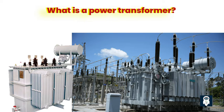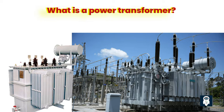Step-up transformers increase the voltage from the generation level to a higher voltage suitable for long-distance transmission over transmission lines. Step-down transformers, on the other hand, decrease the voltage from the transmission level to lower distribution voltages suitable for consumer use. Power transformers are designed to handle high power ratings and operate at high voltage levels, typically ranging from hundreds of kilovolts (kV) to several hundred kilovolts.